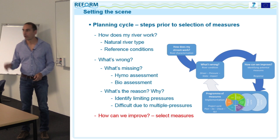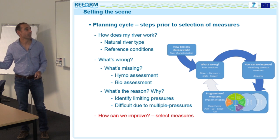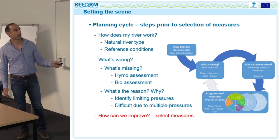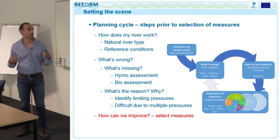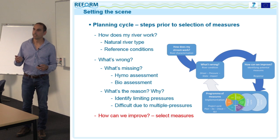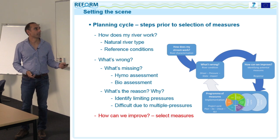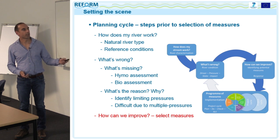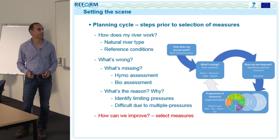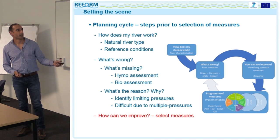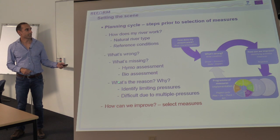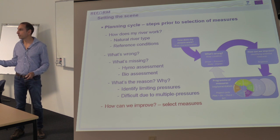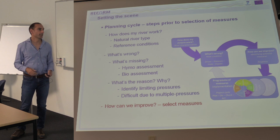First, I would like to show how this presentation links to previous ones. In the morning, Angela started with the question 'how does my stream work?' showing natural river types and reference conditions. Then we had presentations on 'what is wrong?' with two sub-questions: what's missing — the difference between present state and desired state — and what is the reason for this difference, identifying the main limiting pressures.